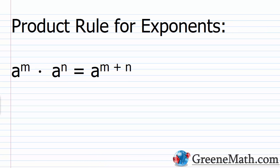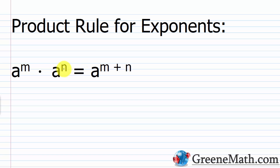When we multiply powers with like bases, we keep the base the same and we just add the exponents. So if I have some real number a raised to the power of m multiplied by the same real number a raised to the power of n, this is equal to a raised to the power of m plus n. So a is the base in each case, so we keep it the same, and then add the exponents — m plus n.